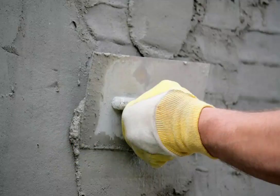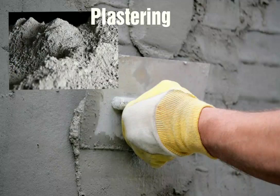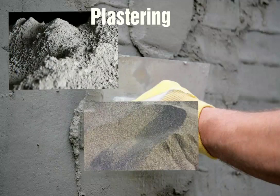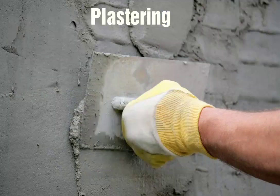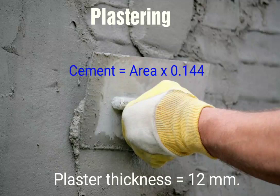And lastly, it's for finishing both sides of the masonry wall, which is called plastering. Materials needed are cement, sand, and water. Given the area of 8.1 square meters and a plaster thickness of 12 millimeters, to find the quantity of cement, multiply the wall area by 0.144, and for sand, multiply 0.012 by the wall area.